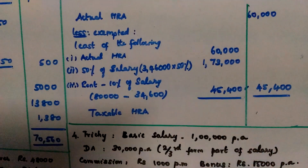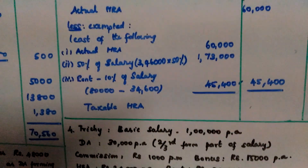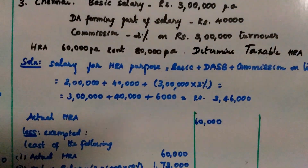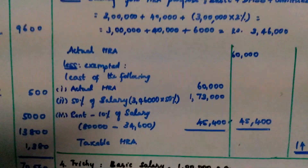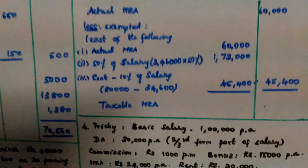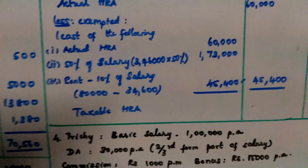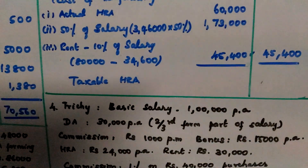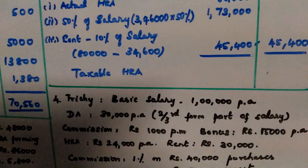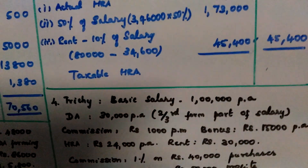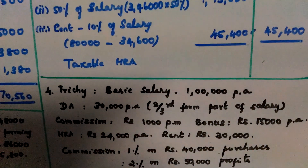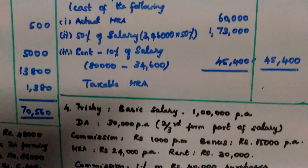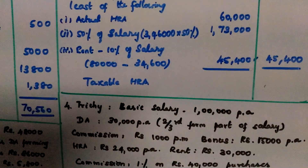Step 3 — Rent minus 10% of salary: Rent is Rs. 80,000 per annum. 10% of Rs. 3,46,000 is Rs. 34,600. So Rs. 80,000 minus Rs. 34,600 equals Rs. 45,400. The minimum of the three values is the exempted HRA, and taxable HRA is calculated accordingly.